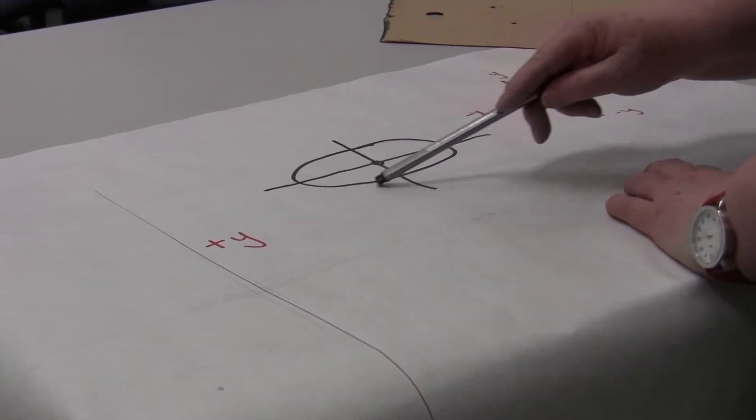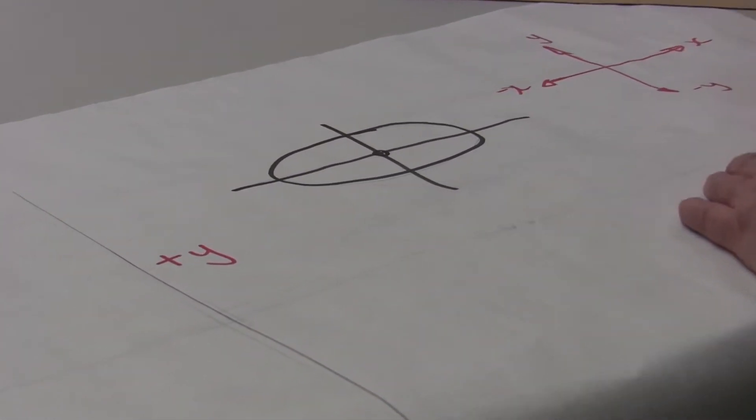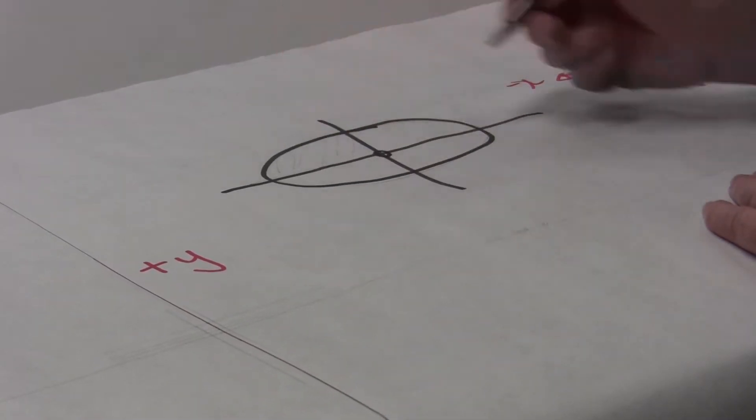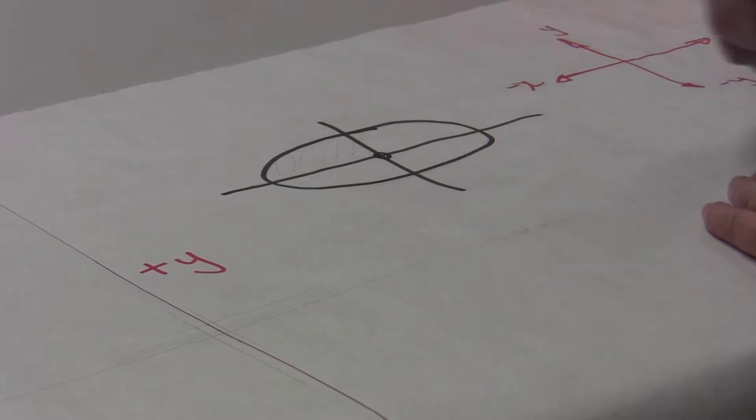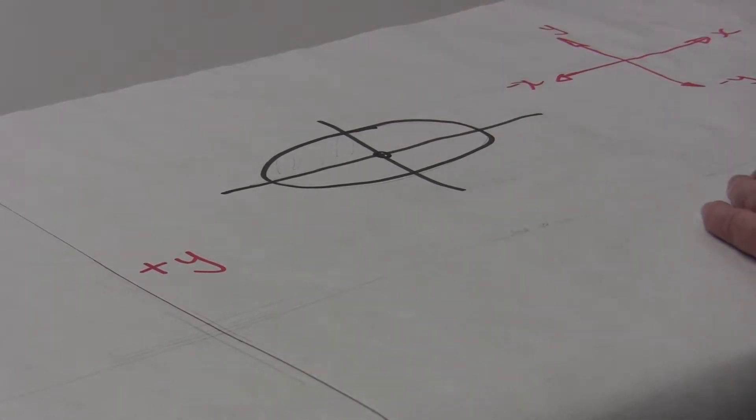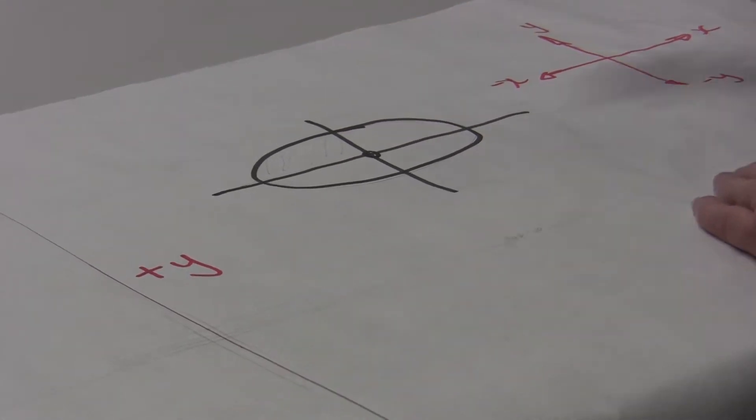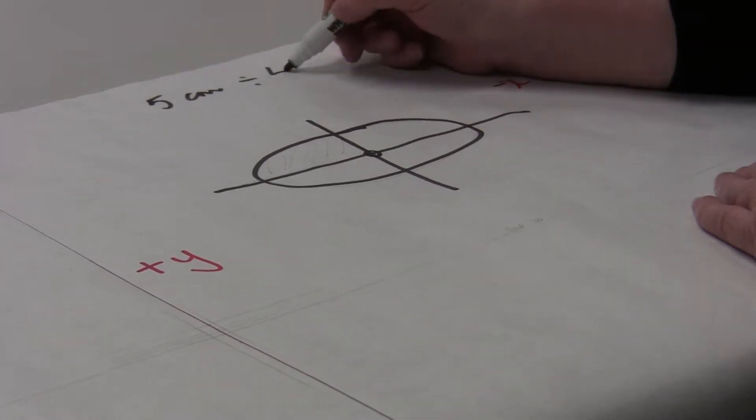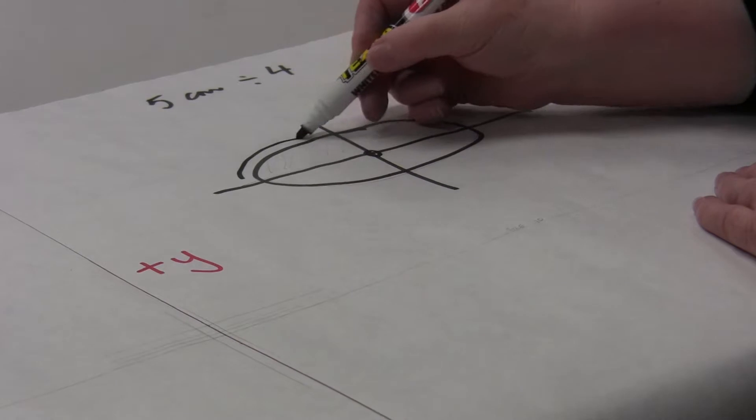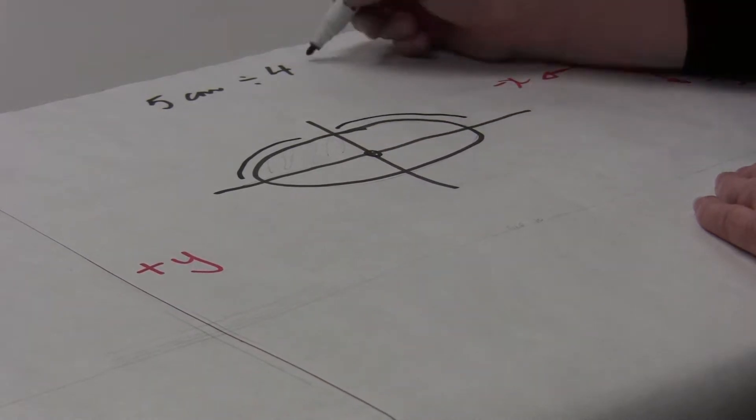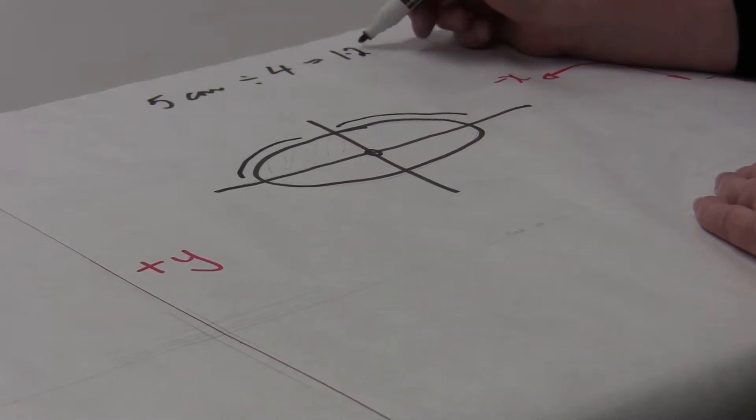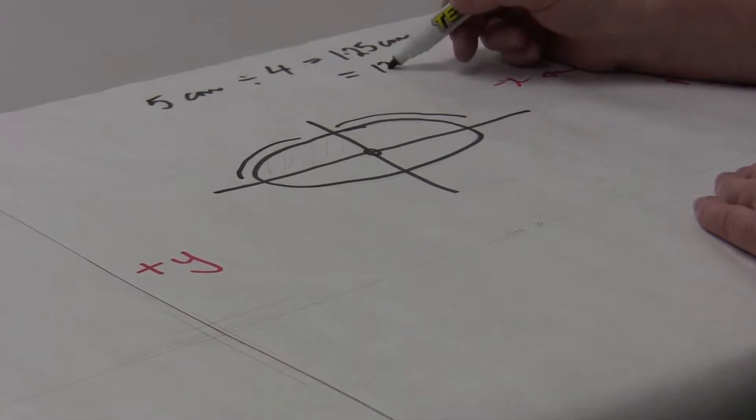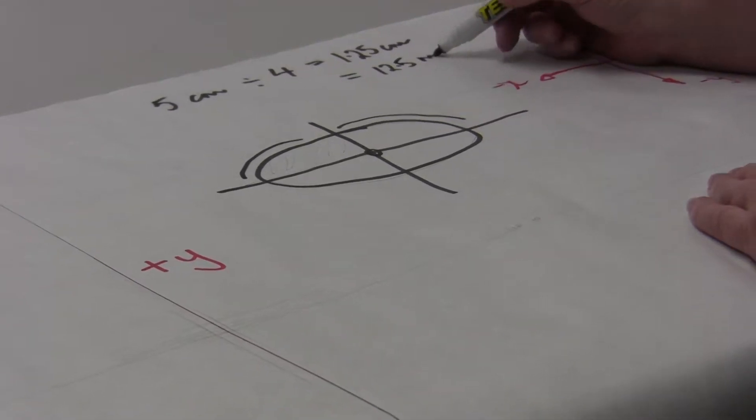So this is our body. One quarter of our pattern is in there. If we've got five centimeters around the body we need to divide that five by four to give us the amount for each quarter area, and that is 1.25 centimeters or 12.5 millimeters.